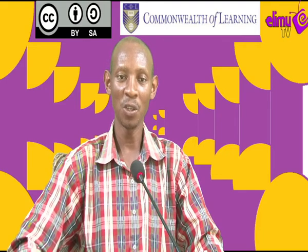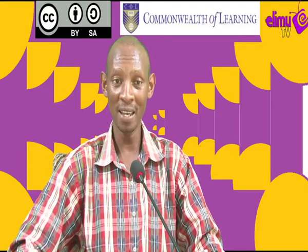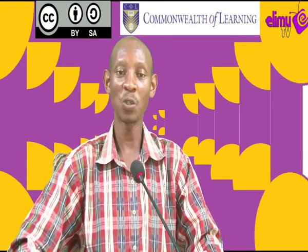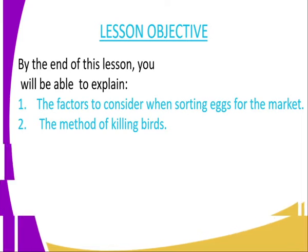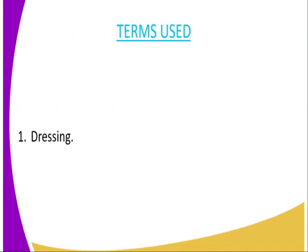On to the lesson objectives: by the end of this lesson, you should be able to explain the factors to consider when sorting eggs for the market, and number two, the methods of killing birds.